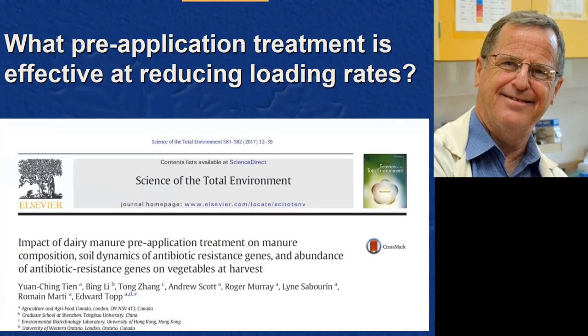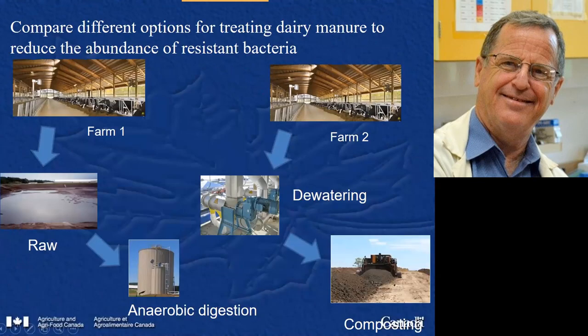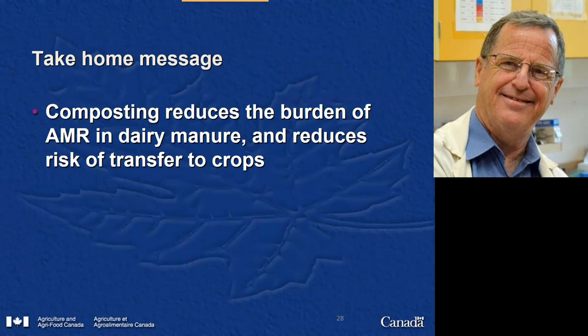The final piece of data references treatment methods, asking what pre-application treatments are effective at reducing loading rates of antibiotic resistance genes. We sourced four kinds of manure from commercial dairy farms near our research center: raw manure, anaerobically digested manure, mechanically dewatered manure, and composted manure. We applied them in field experiments and did the same measurements as before. The conclusion is that of those four kinds, the composting option reduces the burden of antimicrobial resistance in the manure and reduces the likelihood of transfer of those genes to crops post-application.